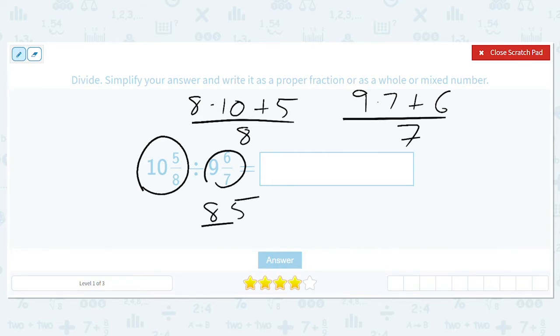And when we divide, we actually have to flip, right? So 9 times 7 is 63 plus 6 is 69 over 7. So it'll be times 7 over 69. And when you simplify that, you will end up with 595 over 552.